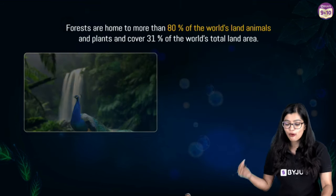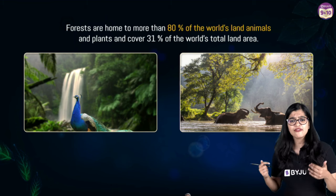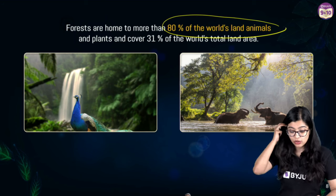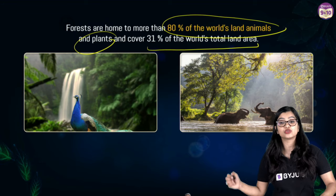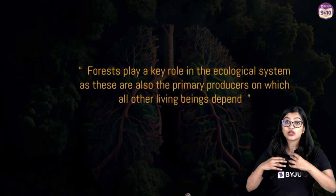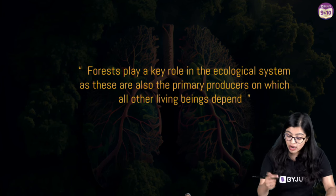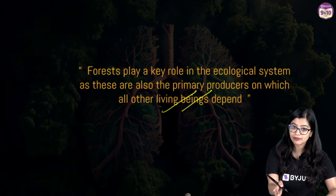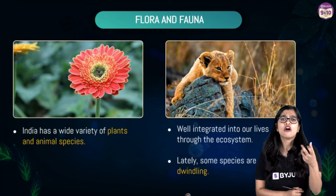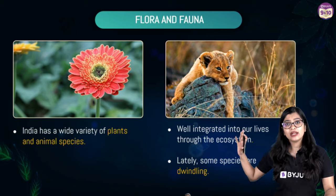Forests are home to almost 80% of the world's land animals and cover 31% of the total land area. Forests play a very important role in ecological systems because the large population of trees and plants are producers, and other animals and organisms are dependent on these plants. Forests are diverse in the kind of flora — all plant organisms — and fauna — all animals — that we find in them.